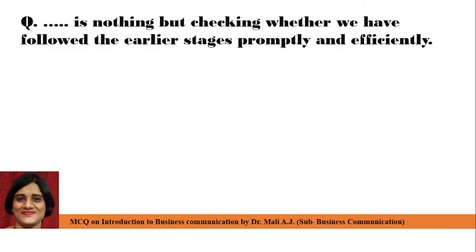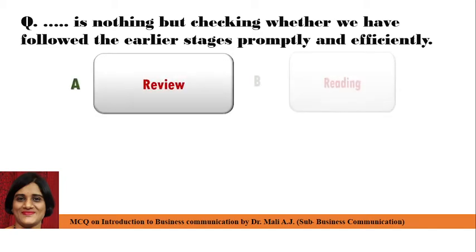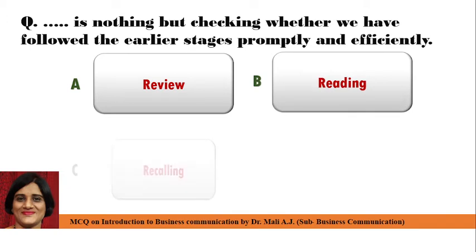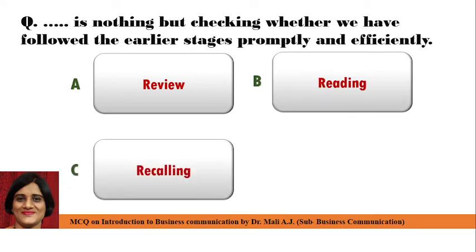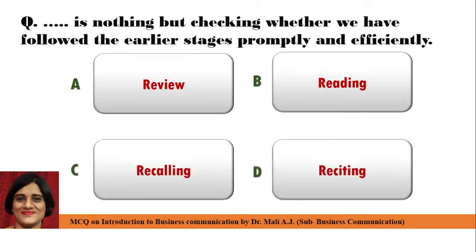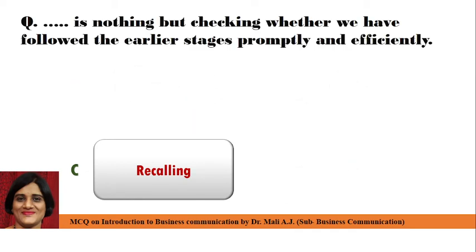Next question: Dash is nothing but checking whether we have followed the earlier stages promptly and efficiently. Point A: Review, Point B: Reading, Point C: Recalling, and Point D: Reciting. Correct answer is Point C: Recalling. Recalling is nothing but checking whether we have followed the earlier stages promptly and efficiently.